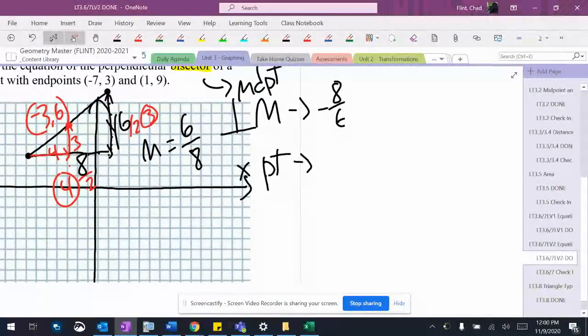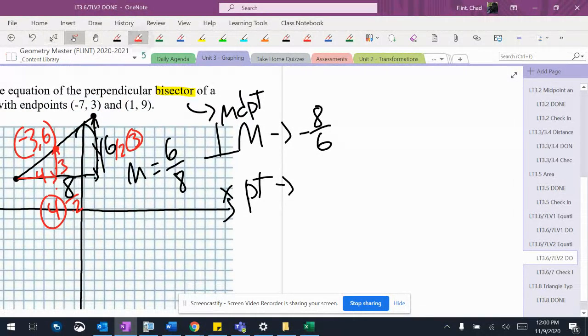That is the point that my new line has got to go through. It's a bisector, so negative three, six. So there's my lead up work.